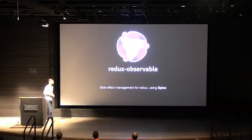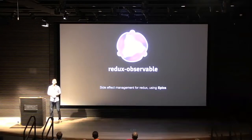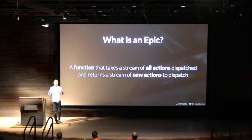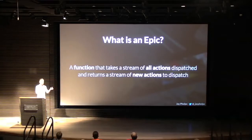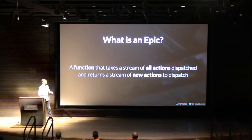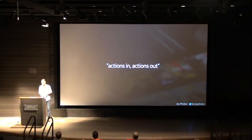Redux Observable is a middleware for Redux for managing your side effects, including async stuff. We do it using something called an epic — it's similar to a saga if you're familiar with that term, but not the same; we wanted to differentiate ourselves. An epic is just a function that takes a stream of all the actions your application dispatches, and it's expected to return a new stream of actions that the epic wants to dispatch.